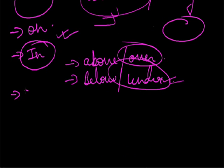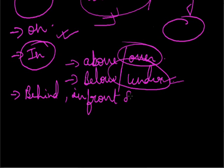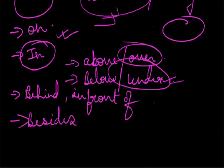Prepositions like 'behind' and 'in front of' suggest positions opposite to each other. For example: 'A long queue had formed behind me.' 'There were only two passengers in front of me.' 'Beside' means next to: 'There is a small table beside the bed,' or 'The girls' hostel was right beside the school building.'